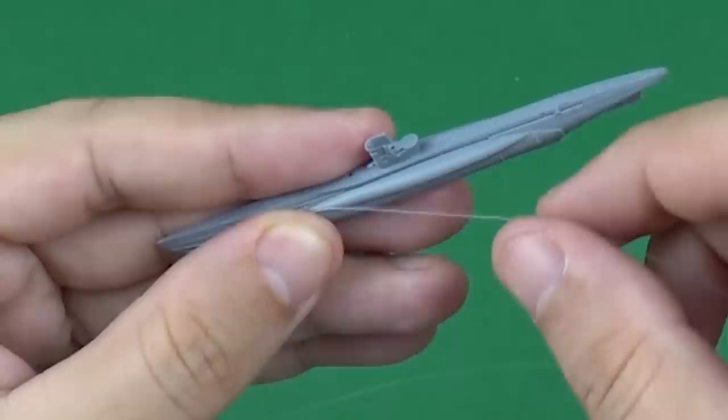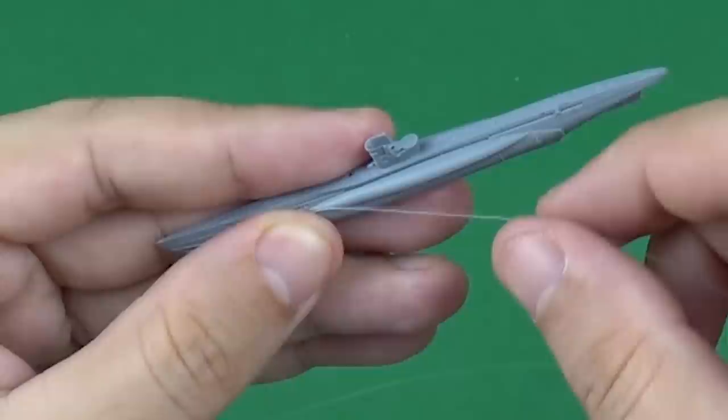I'm adding some minor details using stretched sprue instead of filling and sanding the intersection lines.